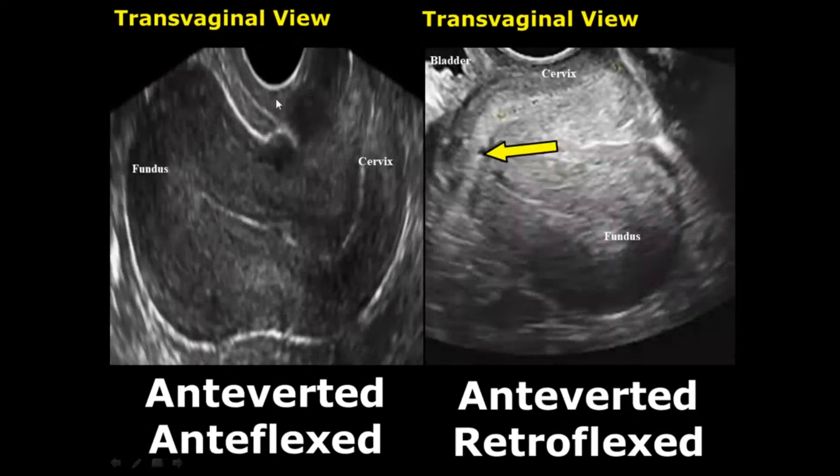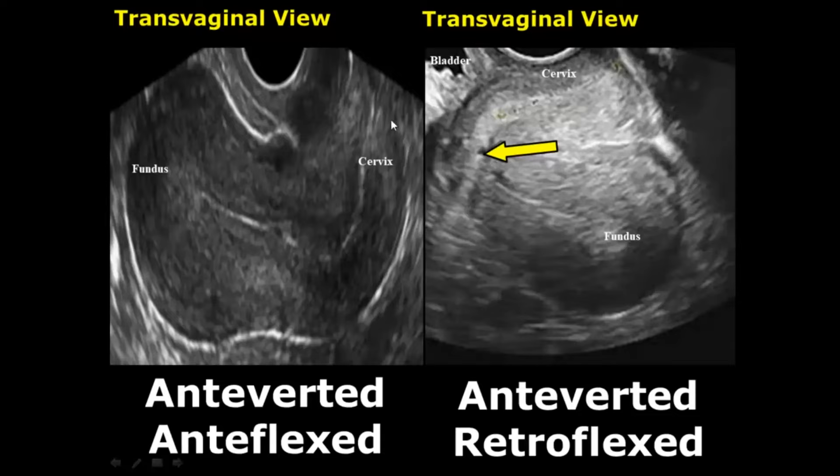Here we notice two things, that's why we use two terms: anteverted — the cervix is facing anteriorly or upward in this image — and anteflexed — the body of the uterus is bending anteriorly. The bladder is supposed to be in the top left corner of the image.